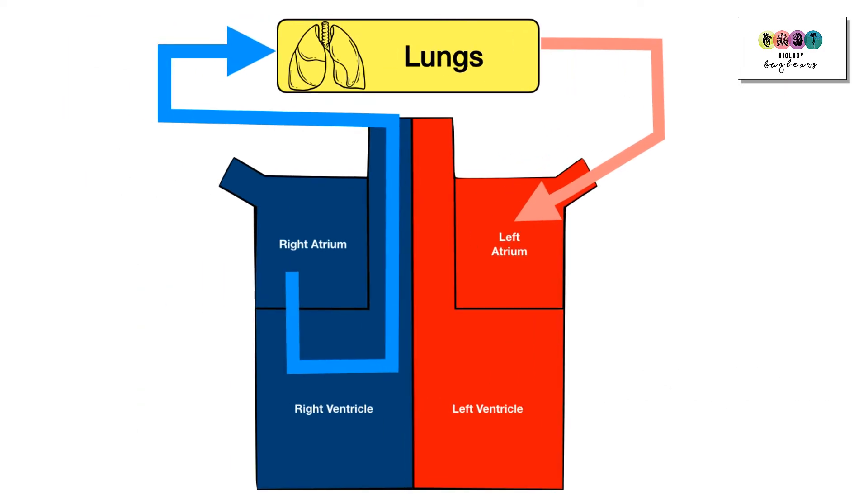Deoxygenated blood is pumped out of the right ventricle, leaves the heart in the pulmonary artery and is delivered to the lungs where it's reoxygenated. This reoxygenated blood is delivered back to the heart in the pulmonary vein.